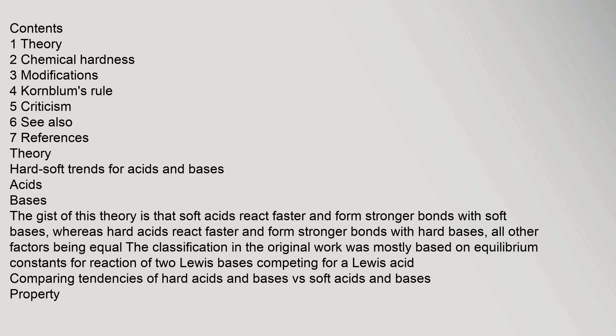Hard and Soft Trends for Acids and Bases. Hard acids and bases have small atomic and ionic radius, high oxidation state, low polarizability, and — for bases — high electronegativity, low HOMO energy. Soft acids and bases have large atomic and ionic radius, low or zero oxidation state, high polarizability, and — for bases — lower electronegativity and higher HOMO energy, with lower LUMO energy for soft acids.